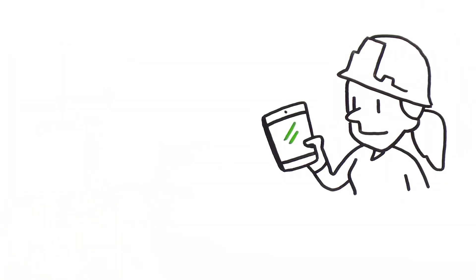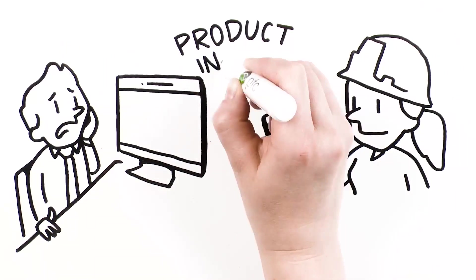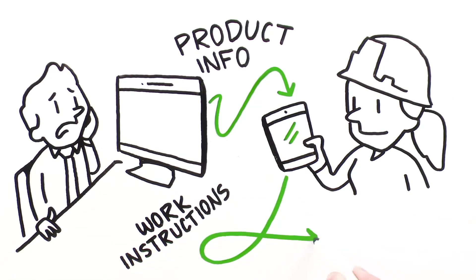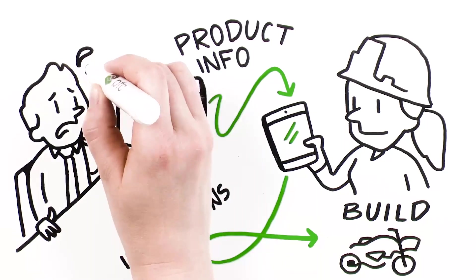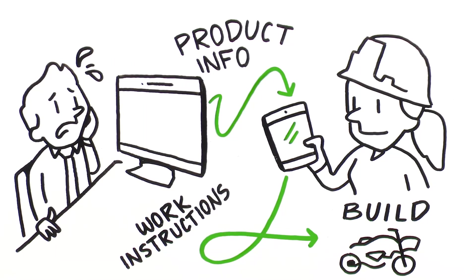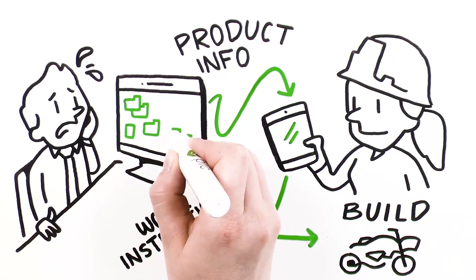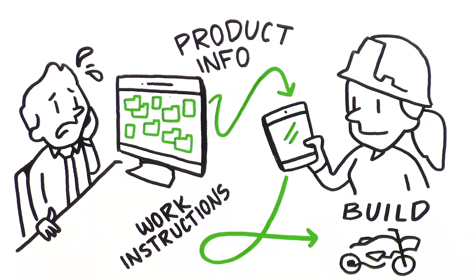For instance, plant workers need the latest product information to create work instructions or production plans so they can actually build the motorcycle. As an engineer, I need to be able to give those plant workers a view of that information without pulling and sharing it myself.